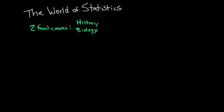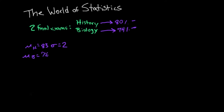In this first example, we scored on two final exams and we're going to compare those scores to the class average using z-scores. Our first test was a history test and we scored 80%, and the other test that week was a biology exam where we scored 74%. We know that the average for the history test was 83% with a standard deviation of 2, and the average for the biology class was 76 with a standard deviation of 3.